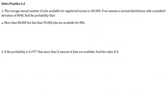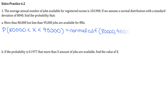Practice problem 1a: the average annual number of jobs for registered nurses is 103,900, with a standard deviation of 8,040, normally distributed. Find the probability that more than 80,000 but less than 95,000 jobs are available. Since we want an area or probability, we use normal CDF. Lower bound is 80,000, upper bound is 95,000, mean is 103,900, and sigma is 8,040. The result is 0.1327.